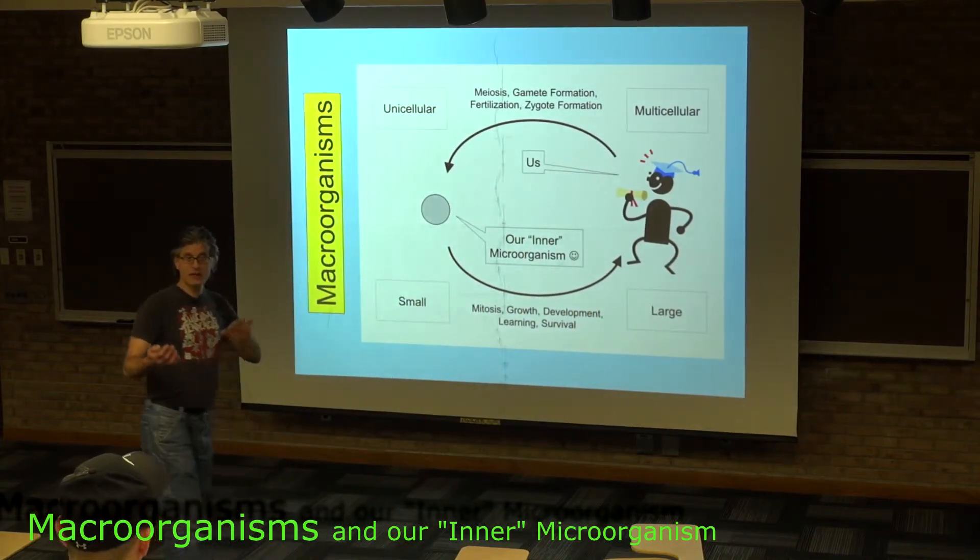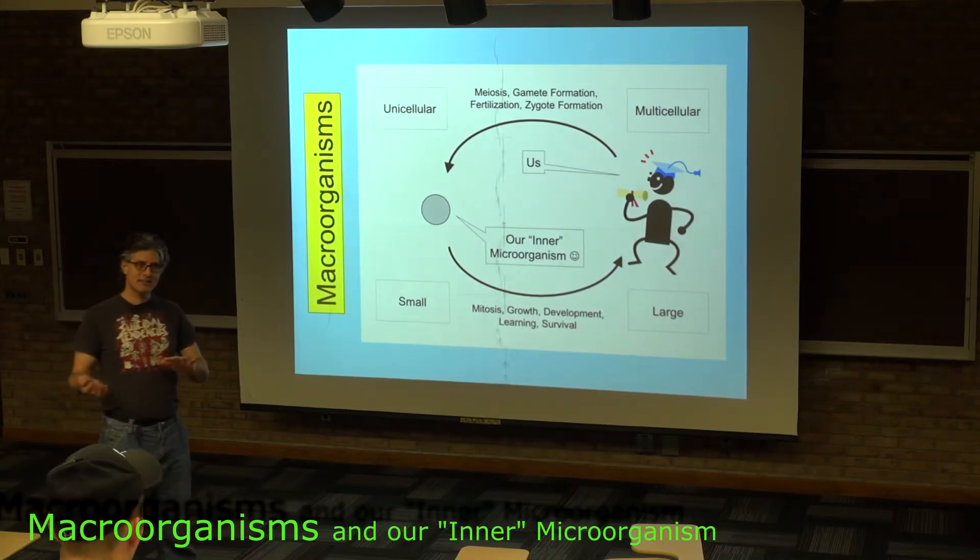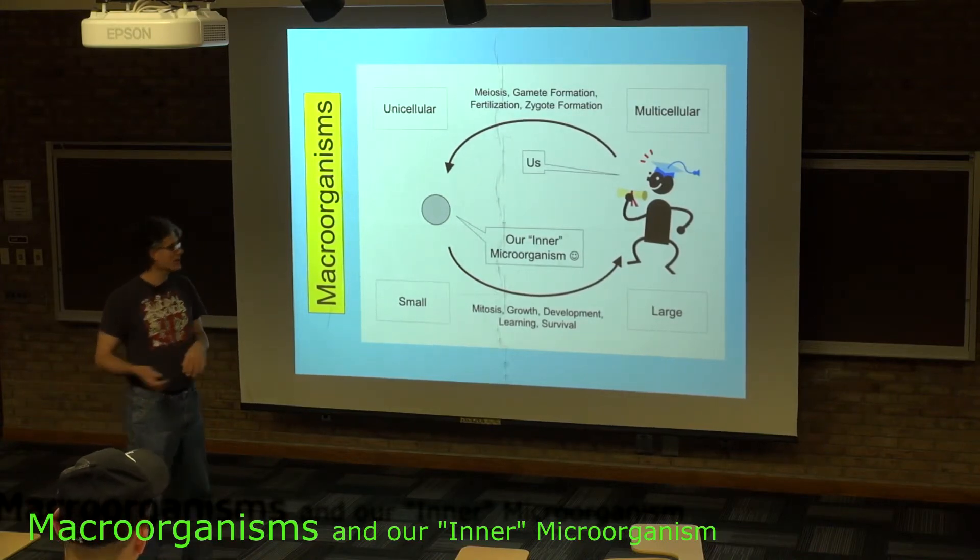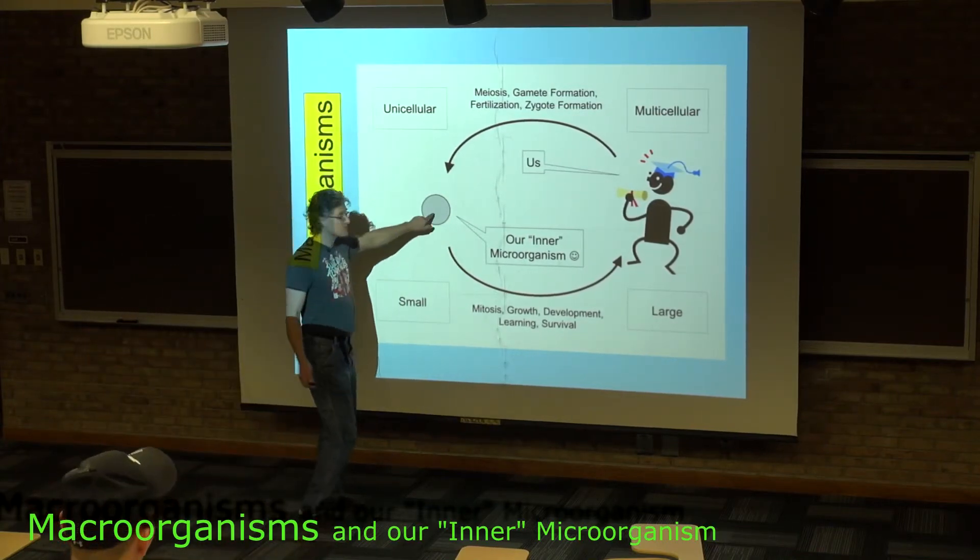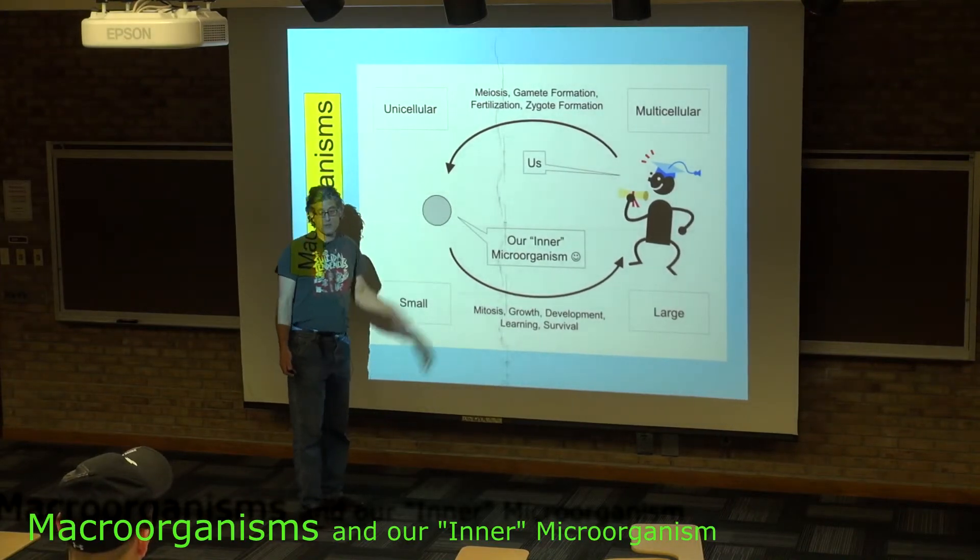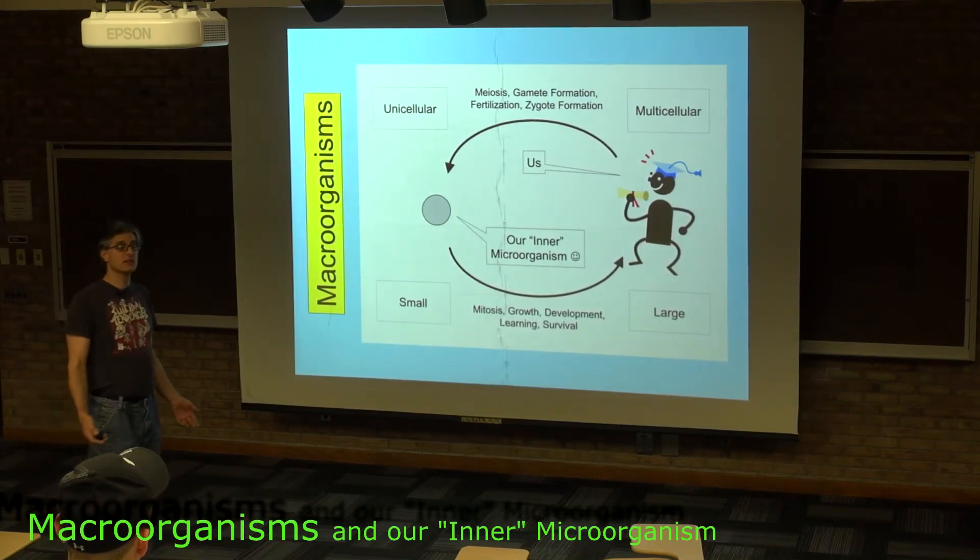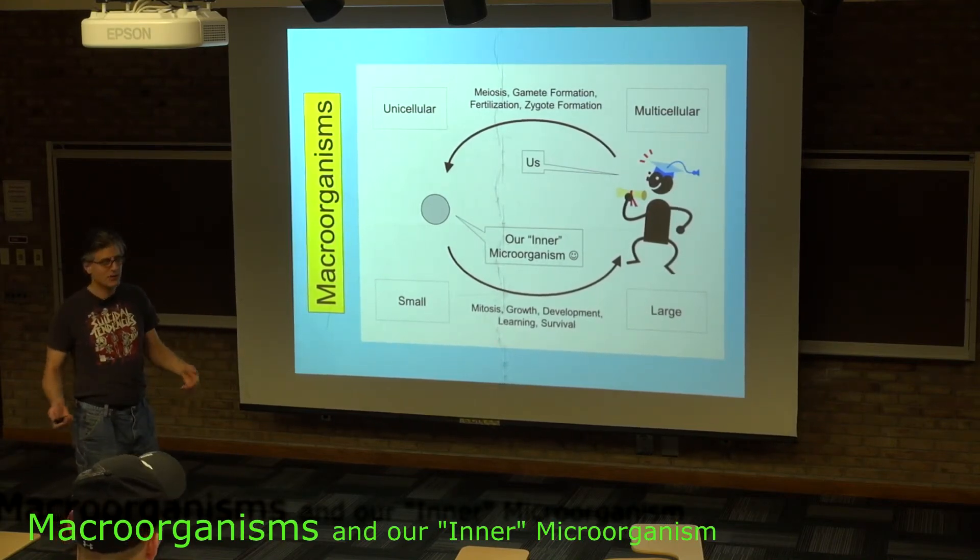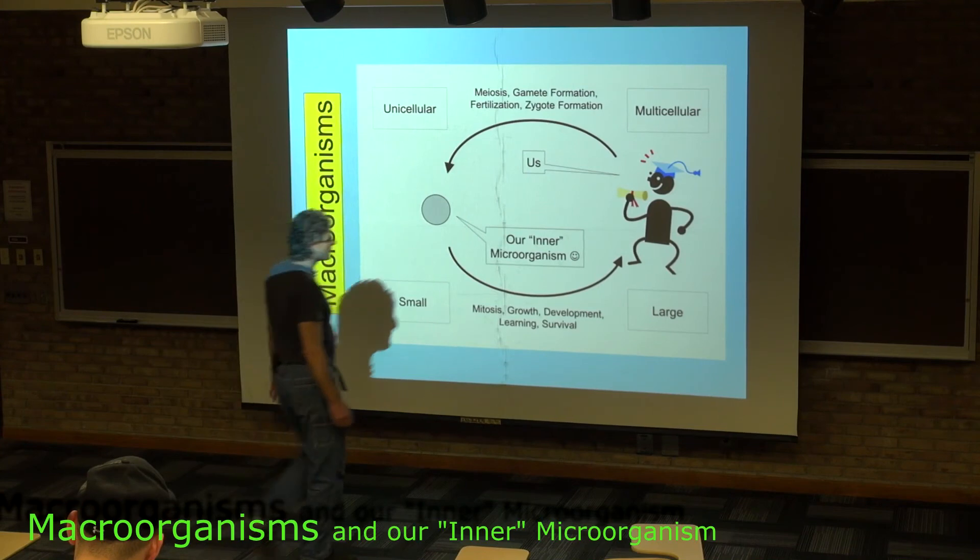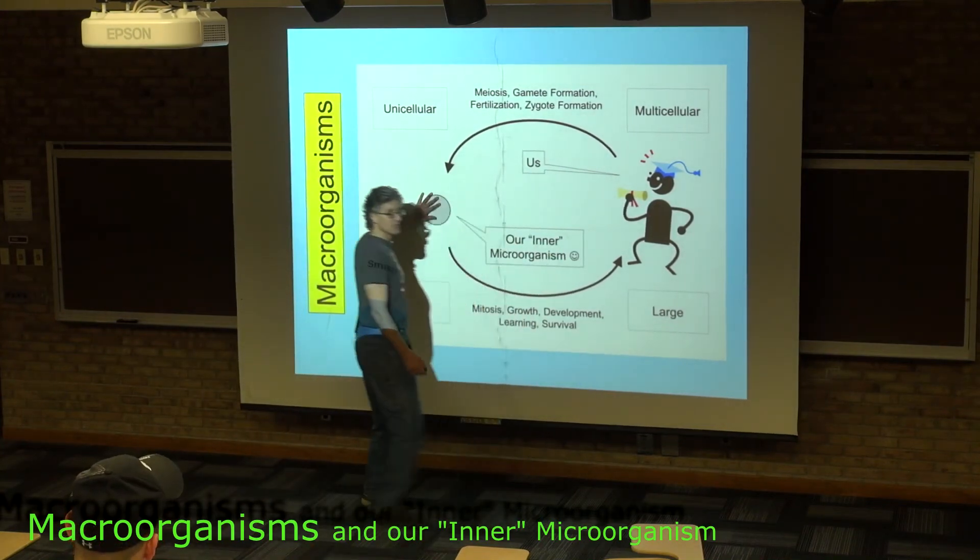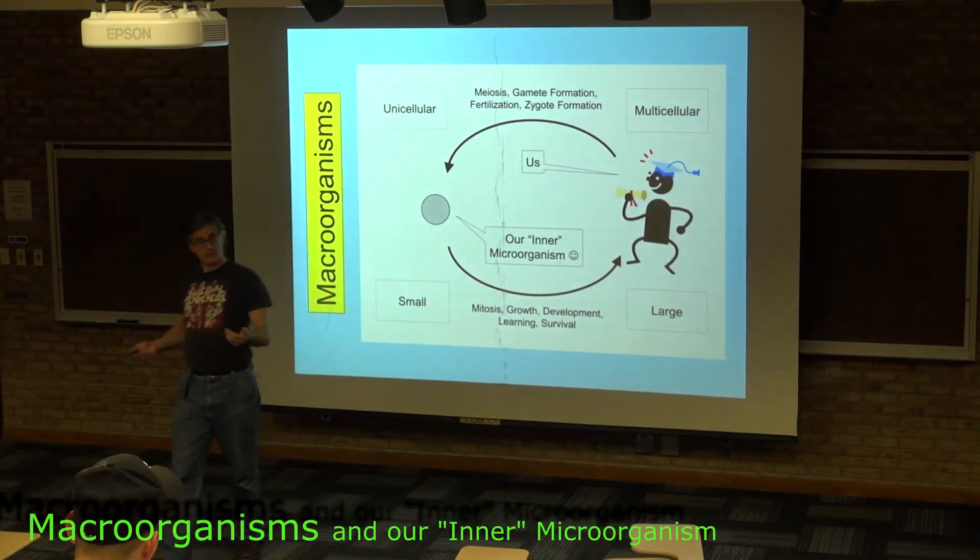But even the big things—the plants, animals, and fungi—they all tend to pass through a single-cell, very small stage. They're not considered microorganisms because as adults at their reproductive stage they're big, whereas microorganisms, when they're ready to reproduce, are still tiny.